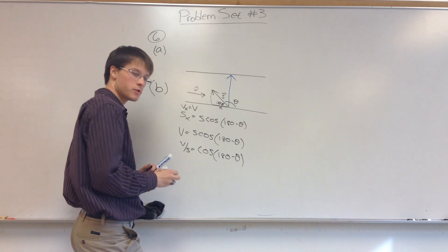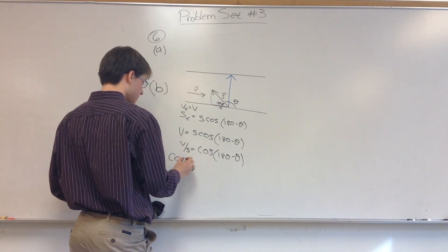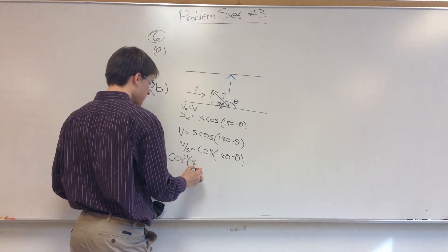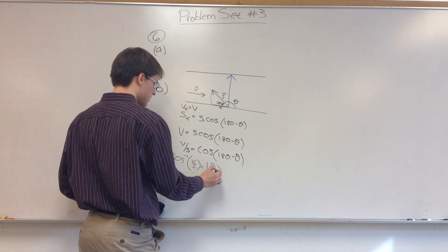Now we're going to take the inverse cosine of both sides. So we have the inverse cosine of V over S is equal to 180 minus theta,